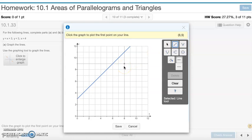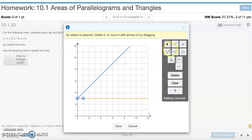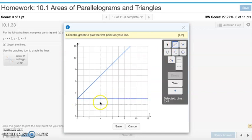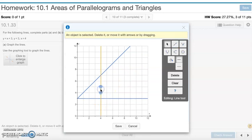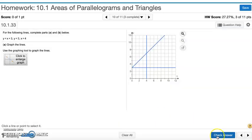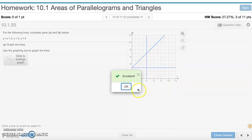y equals 3 is going to be a horizontal line going through 3. And x equals 4 is a vertical line going through 4 for x. So hit save, check answer, and that's our graph.